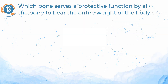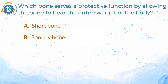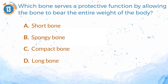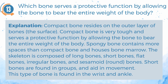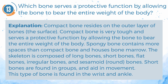Number 13. Which bone serves a protective function by allowing the bone to bear the entire weight of the body? A. Short bone. B. Spongy bone. C. Compact bone. D. Long bone. The answer is C — compact bone. Compact bone resides on the outer layer of bones, the surface. It is very tough and serves a protective function by allowing the bone to bear the entire weight of the body. Spongy bone contains more spaces than compact bone and houses bone marrow. Short bones are found in groups and aid in movement, and are found in the wrist and ankle.